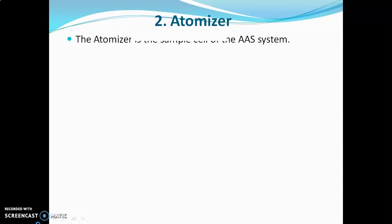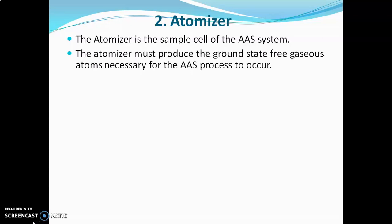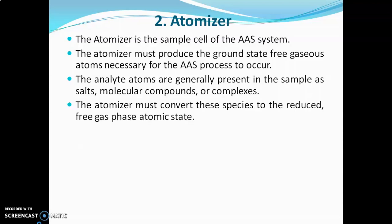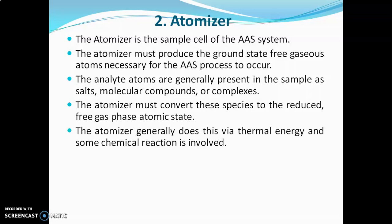The atomizer is the sample cell of the atomic absorption spectrometer. It must produce ground-state free gaseous atoms, which are necessary for the AAS process to occur. The analyte atoms are generally present in the sample as salts, molecular compounds, or complexes. The atomizer must be able to burn the organic material and convert the metal into gaseous metal atoms — converting these species to a reduced free gas-phase atomic state. The atomizer generally does this via thermal energy or with chemical reactions.